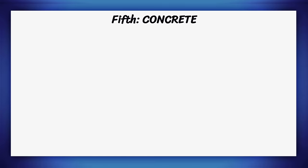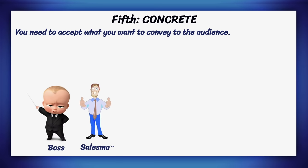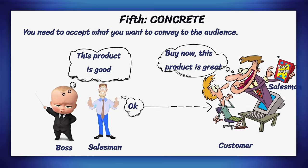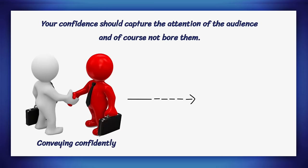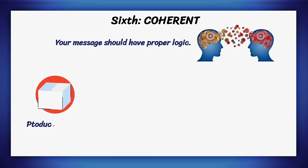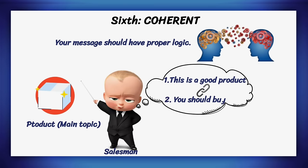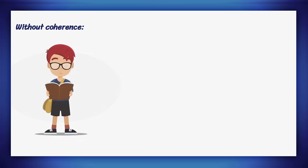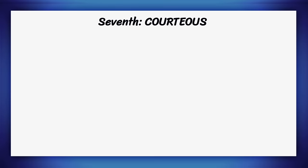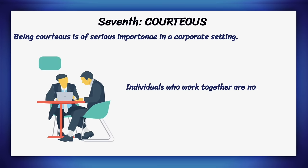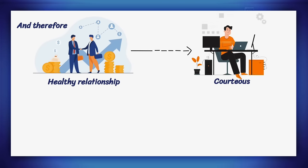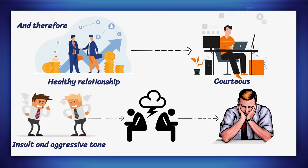Fifth, concrete. You need to be specific about what you want to convey to the audience. Concreteness is an important quality of communication, especially during marketing or advertising campaigns. Your confidence should capture the attention of the audience and not bore them. Sixth, coherent. Your message should have proper logic. All sentences in your mail or report should be connected to the previous one and stick to the main topic. Without coherence, the reader may lose track of what you have conveyed. Seventh, courteous. Being courteous is of serious importance in a corporate setting. Individuals who work together need to maintain a healthy working relationship. Insulting and aggressive tones will cause trouble among individuals and result in reduced productivity.